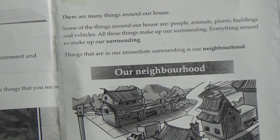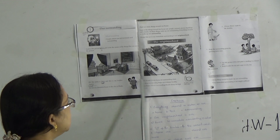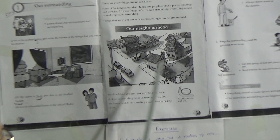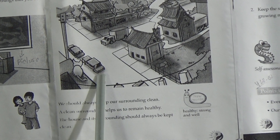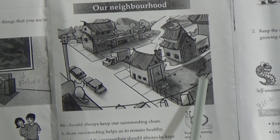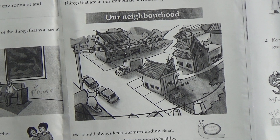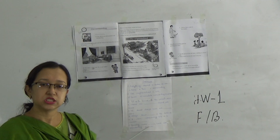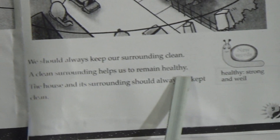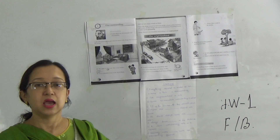The things that are in our immediate surroundings make up our neighborhood. In this picture we see a house, a footpath, a road with vehicles moving, a cat sitting in the balcony of a house, and some green plants in a yard inside the house. We should always keep our surroundings clean — our house, our school, and our roads. A clean surrounding helps us to remain healthy.